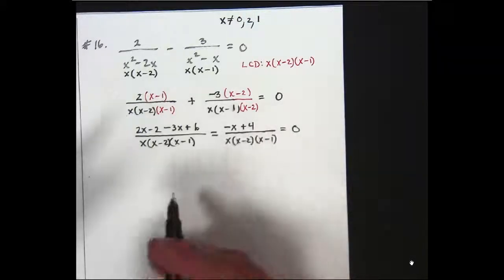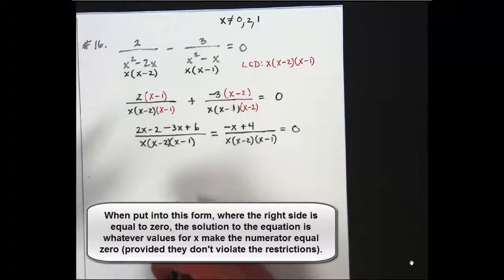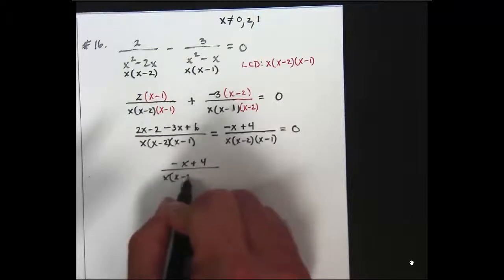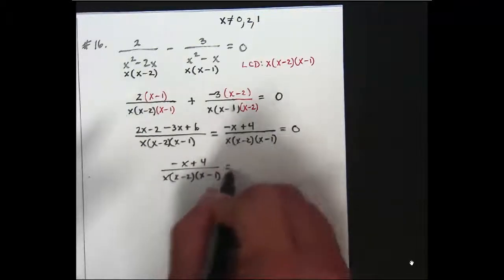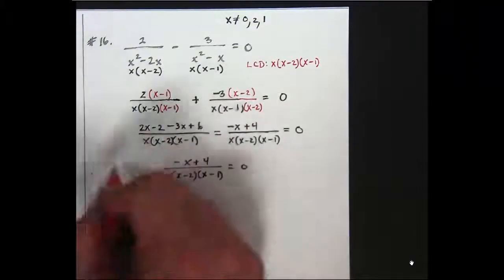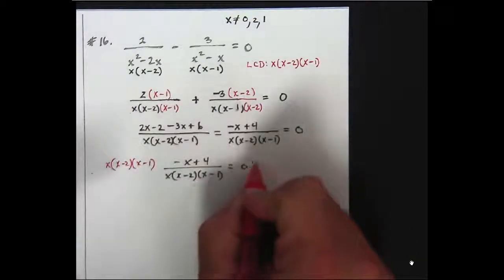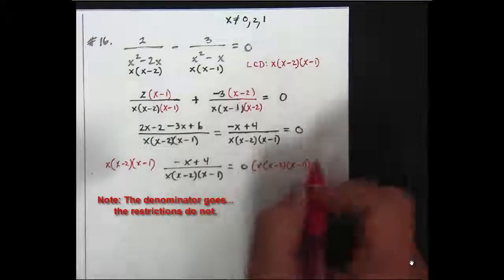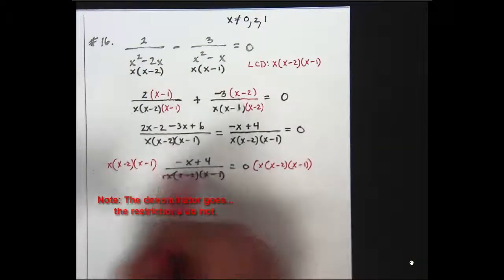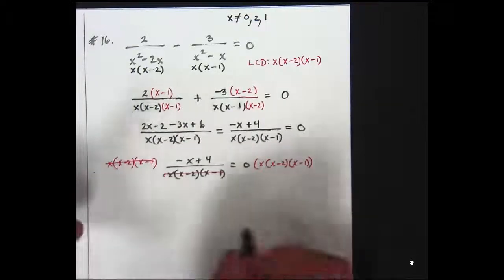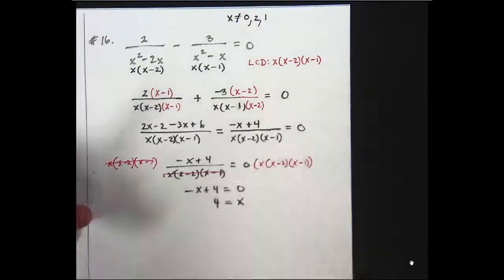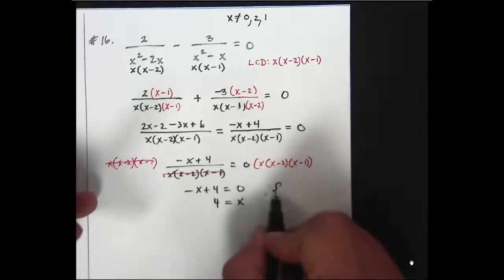So the solution to this equation is whatever makes the numerator equal 0. Does that make sense? So I'll actually show it, but you don't have to do this. You can just know that the solutions are what makes the top equal 0. Why is that? Because if you multiply both sides by the LCD, the whole denominator goes away, and all you have to think about is the numerator. So you get negative x plus 4 equals 0. When does that happen? When 4 is equal to x, right? So your answer is 4.